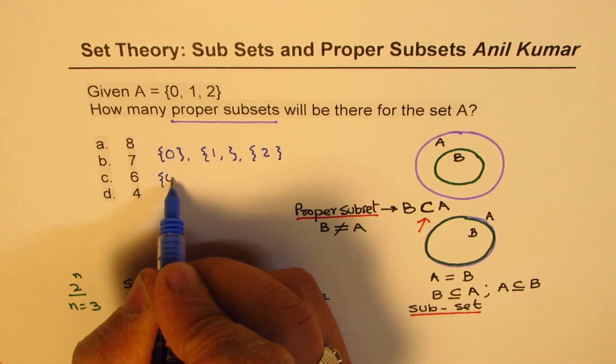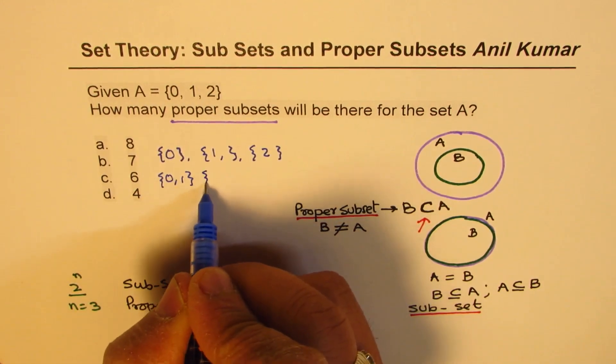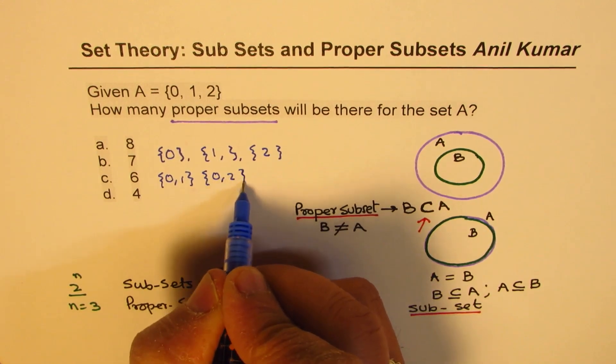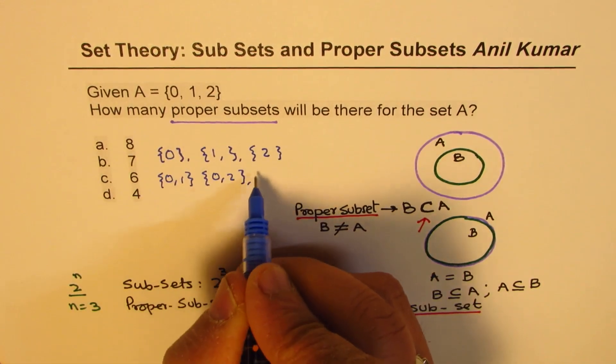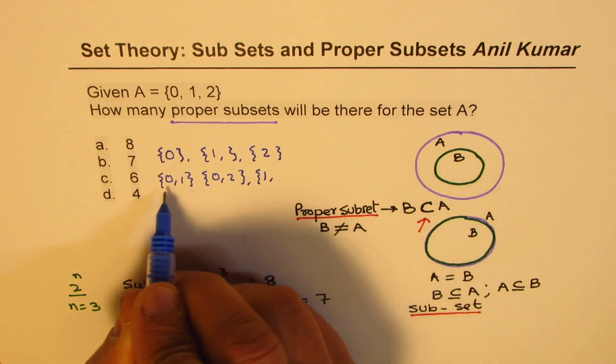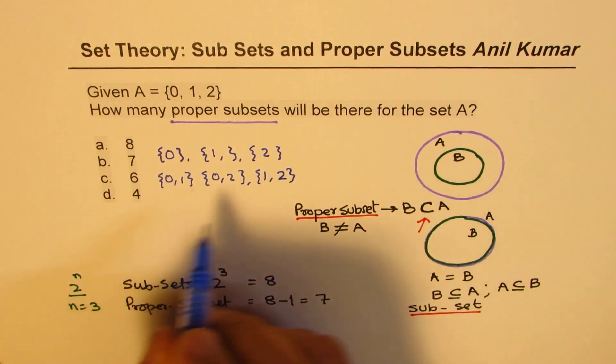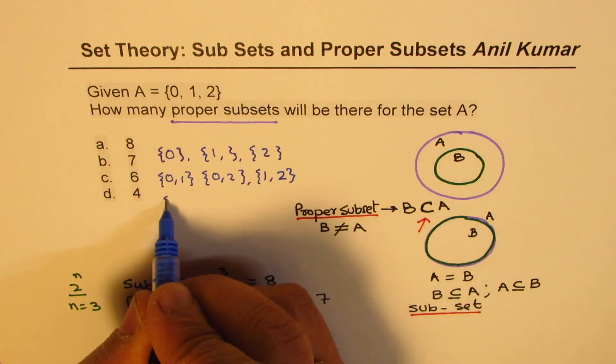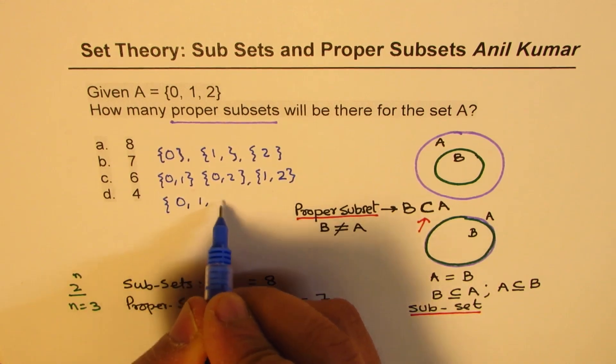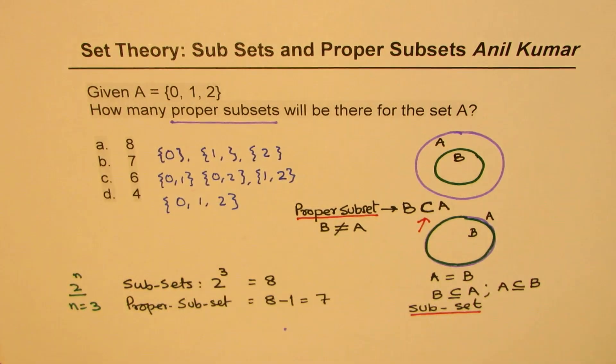And then with one we could have... we already have zero so the order doesn't matter here. And then we could have all three of them, {0, 1, 2}. Can you tell me what did I miss?